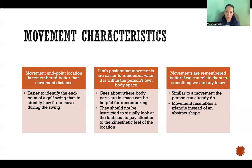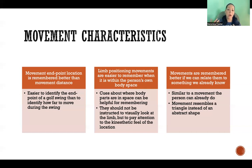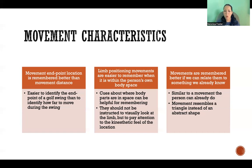It's also important to instruct them not to look at the limb. Let's say the cue is 'elbow up — keep your elbow above your shoulder.' If they turn and look at it, that will actually interfere with their memory and understanding of where their limb positions are. Instead, they should be cued to pay attention to where it is without looking — feel what that feels like — and we're more likely to be able to do that again accurately later. Movements are also remembered better if we can relate them to something we already know. If the new movement is similar to one we can already do, or if the movement resembles a familiar shape like a triangle, giving it meaning helps us remember how to do that movement correctly.